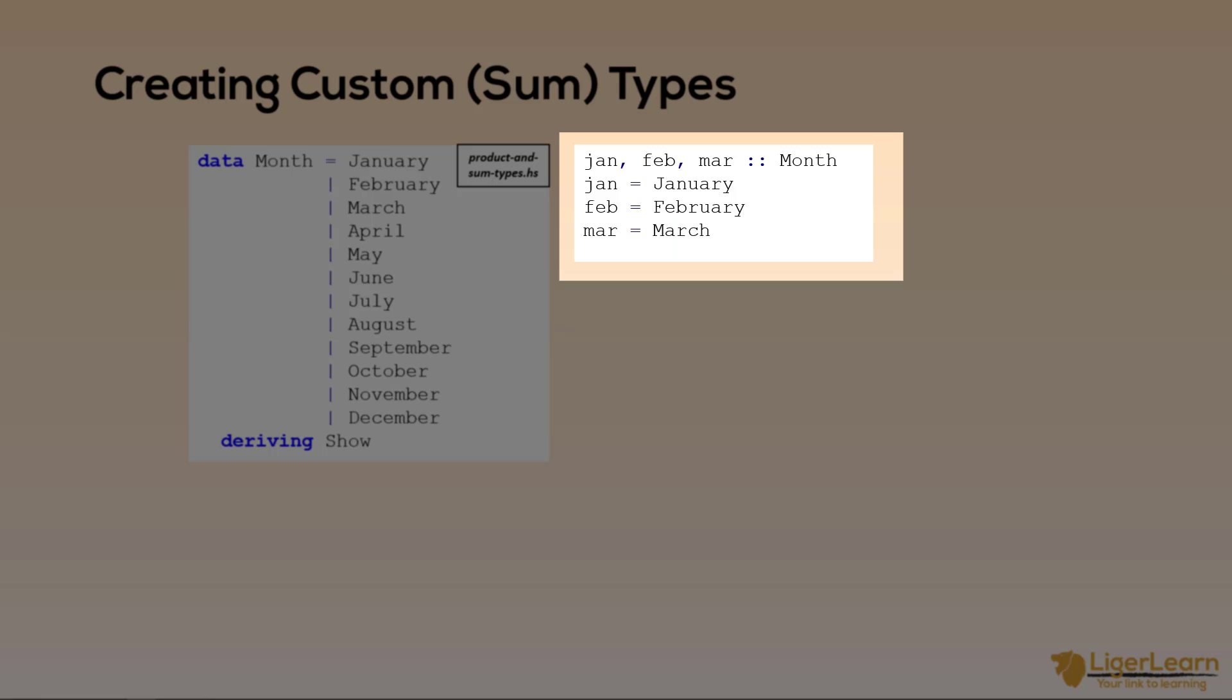Now, when it comes to creating values of the type, we declare them to have the type month, and then we call the constructor we want. So for Jan, we are calling the January constructor, and for Feb, the February constructor, and so on. These constructors, in this case, do not take any arguments. And if we ask for the values in GHCI, since we added the deriving show clause to our type declaration, the values are shown just fine.